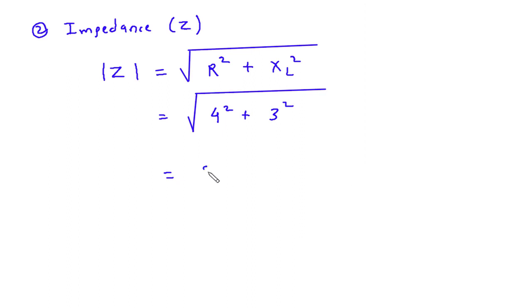So it is 5. Therefore magnitude of Z, or impedance, is equal to 5 ohm.